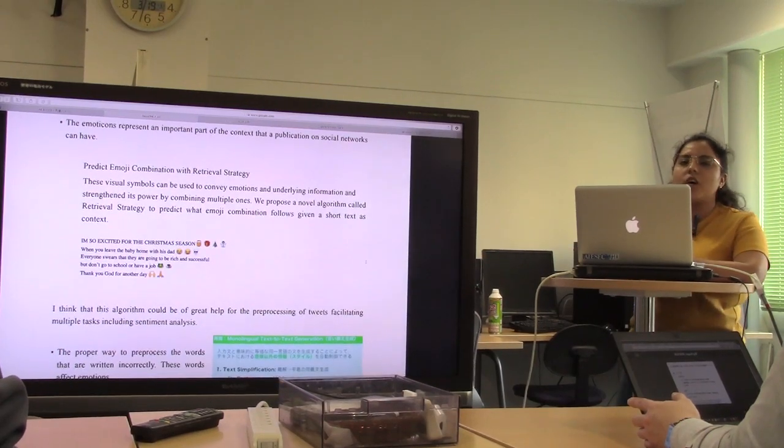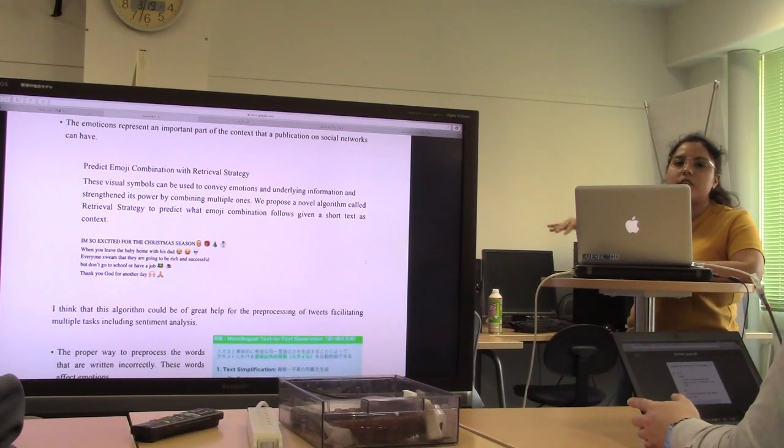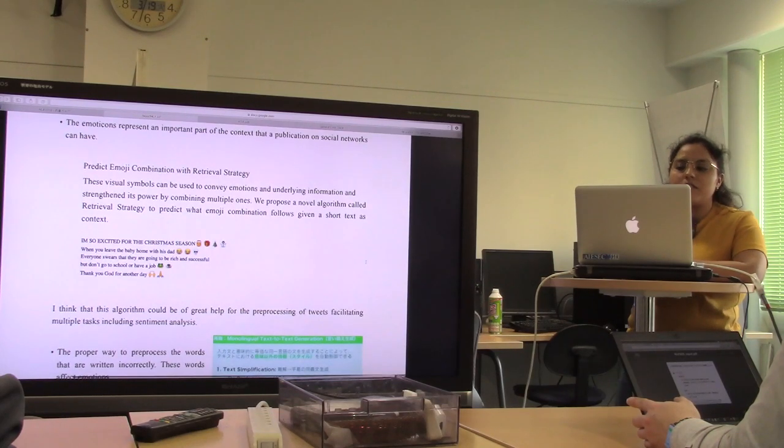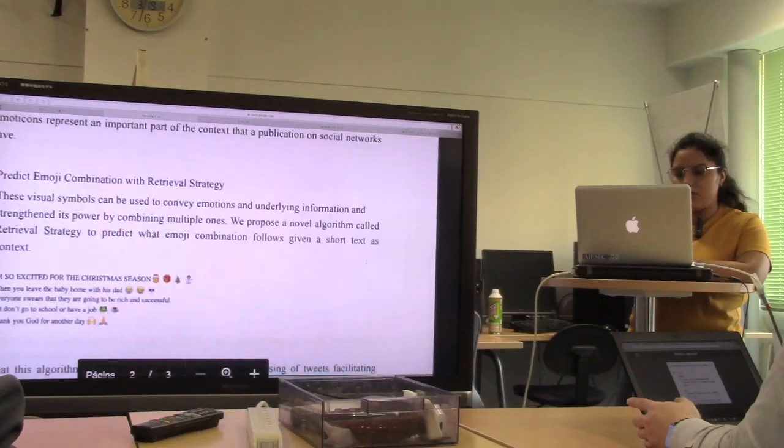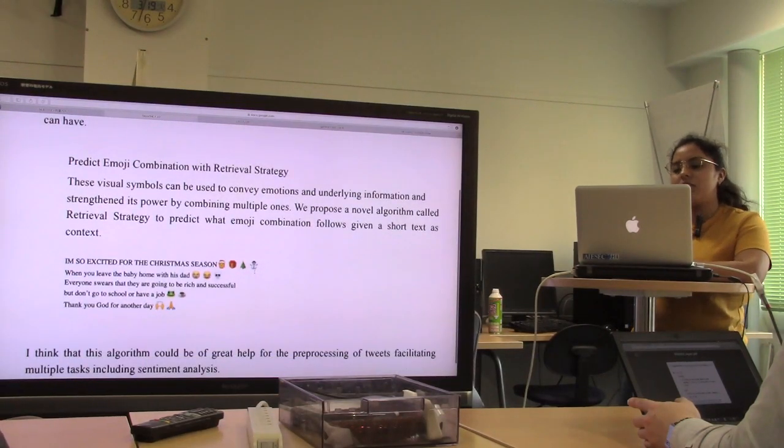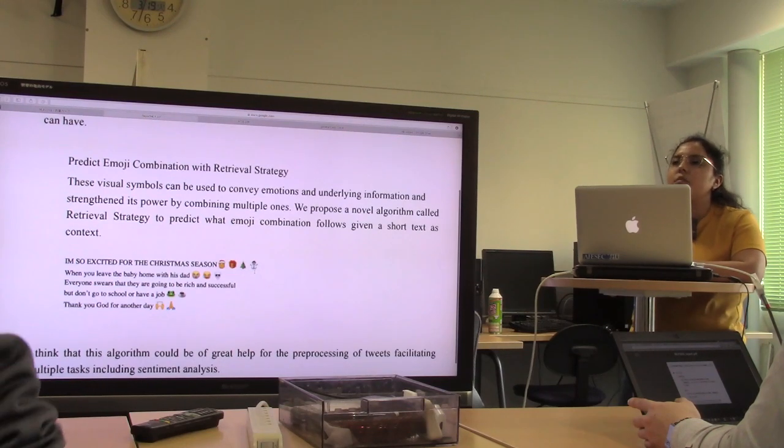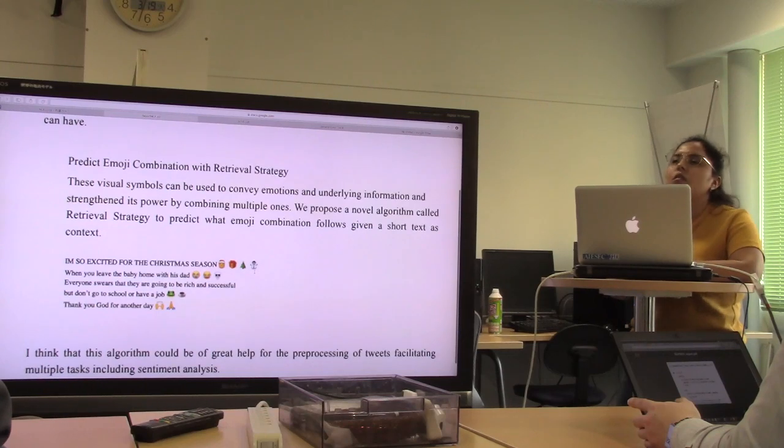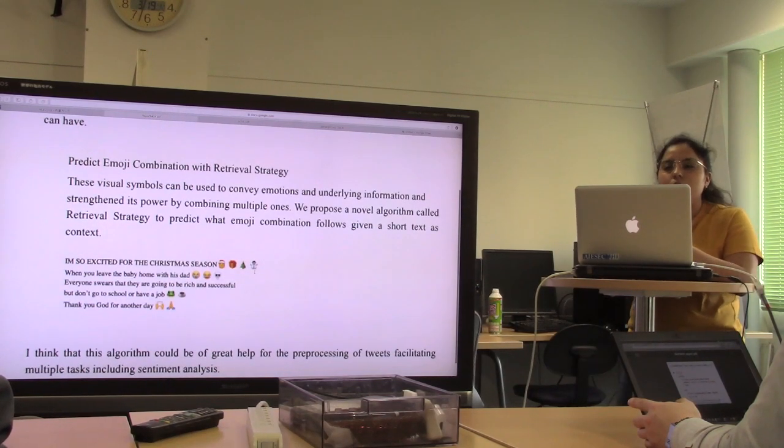He said when you have three or four different emojis, they have some context, like this example: 'I am so excited for the Christmas season,' and people use emojis to say the same thing. So if you create an algorithm that determines that context.